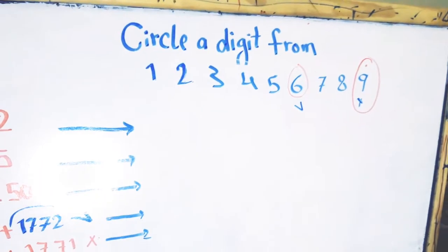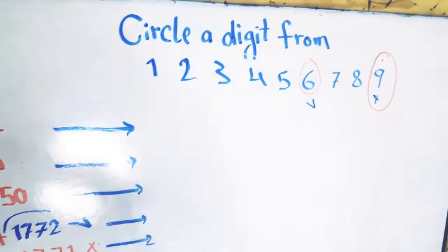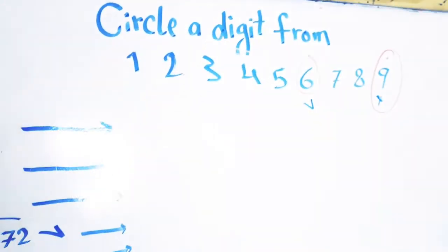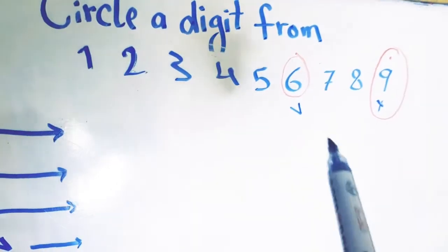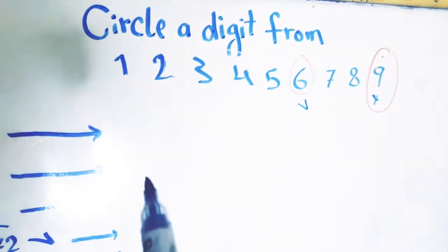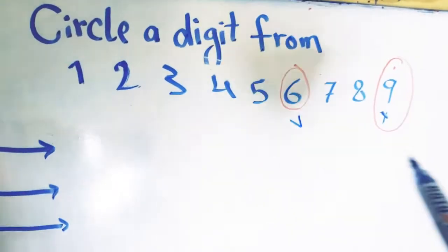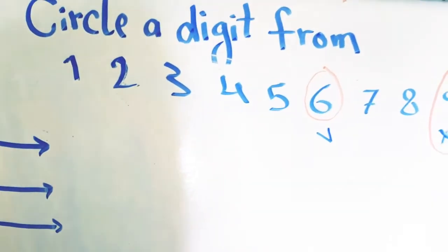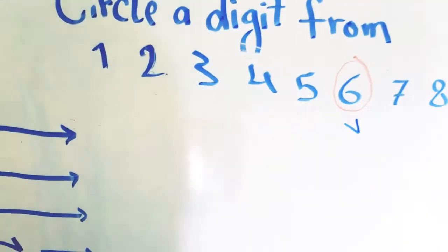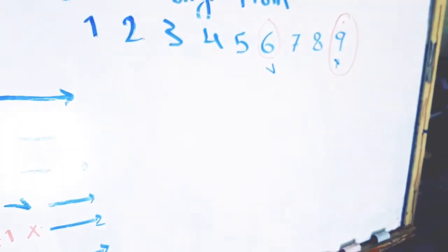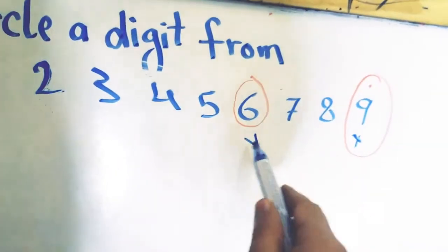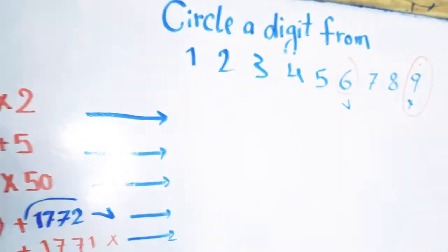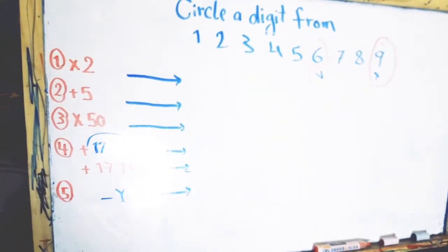Hello everyone, welcome to UZMS channel. Pick a digit from 1 to 9, because I can tell you your age when you pick any digit from 1 to 9. I can use this digit in order to tell you your age. Let's see — suppose that you have picked 6. We will apply 5 steps in order to know your age correctly.